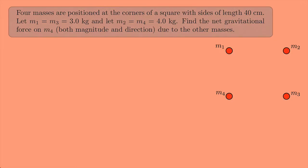Four masses are positioned at the corners of a square with sides of length 40 centimeters. Let m1 equal m3 equal 3 kilograms, and let m2 equal m4 equal 4 kilograms. Find the net gravitational force on m4, both magnitude and direction, due to the other masses.